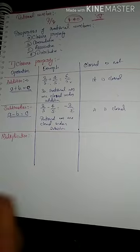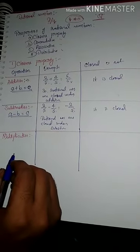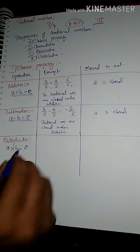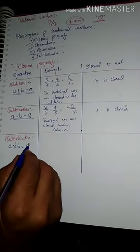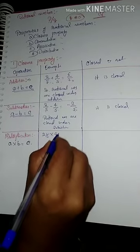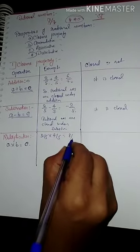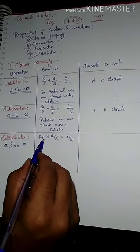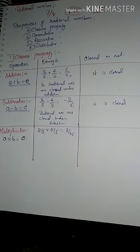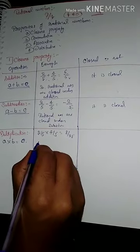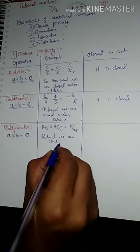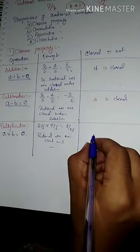The third operation is multiplication. If we multiply any two rational numbers, we get a rational number — that is, a into b equals c. For example: 2/5 into 4/5 equals 8/25. Here, 2/5 and 4/5 are rational numbers, and 8/25 is also a rational number. Therefore, rational numbers are closed under multiplication.